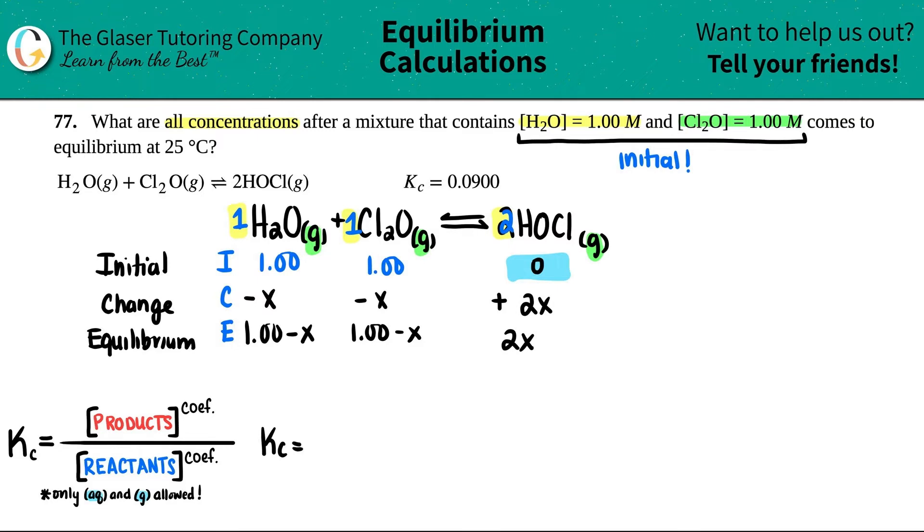Let's write the formula. Kc equals - we have one product and two reactants - the concentration of HOCl, and we raise it to the coefficients. There's a two here, so I'm going to square this, divided by H2O - that coefficient was one, so we can raise it to the first but we don't have to - times Cl2O. This also had a one coefficient.